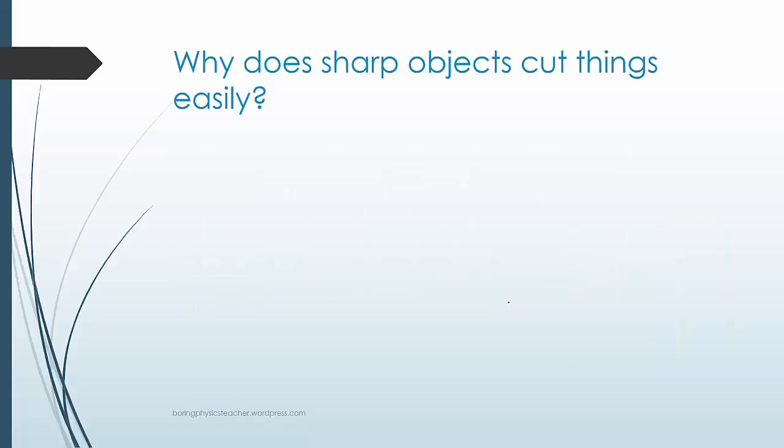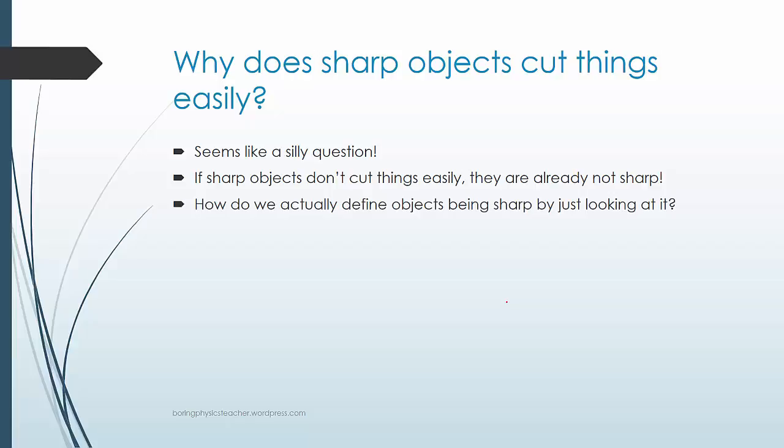So let's think, why is it that sharp objects cut things easily? It seems like a silly question, because if sharp objects don't cut things easily, they are really not sharp. So how do we actually define objects being sharp by just looking at them?